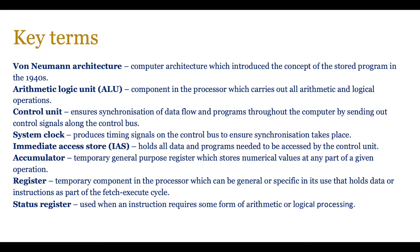The most important key term is von Neumann architecture — computer architecture introduced back in the 1940s which itself introduced the concept of the stored program. Before that, data and instructions were kept separate. Then you've got the ALU, or arithmetic logic unit, that deals with arithmetic and logical operations in the CPU. The control unit ensures synchronization of data flow and programs. The system clock produces timing signals on the control bus to ensure synchronization takes place — think about what we were talking about last lesson with USB and asynchronous.